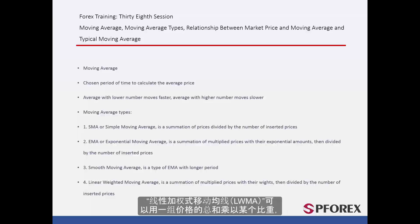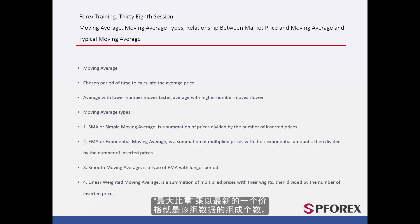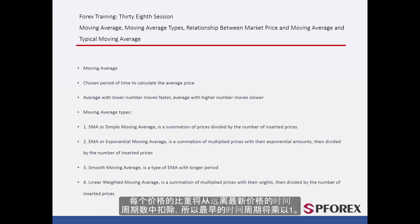LWMA or Linear Weighted Moving Average can be calculated through the summation of prices multiplied by a certain weight, then divided by the number of prices inserted. The maximum weight multiplied by the most recent price equals the number of prices inserted into the LWMA. The weight of each price is deducted based on the number of timeframes away from the latest price, so the earliest timeframe will be multiplied by 1.